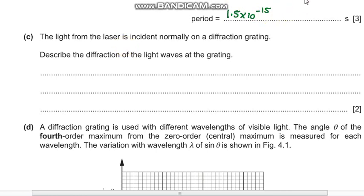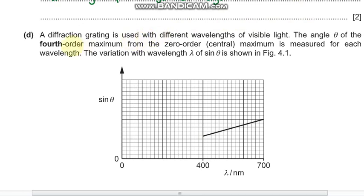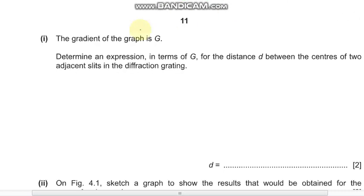In part (d), it shows the graph for a fourth-order maxima from 0 to 4, a graph of sin θ versus λ. It says the gradient of the graph is g. Determine the expression in terms of g for the distance d between the center of two adjacent slits in the diffraction grating.